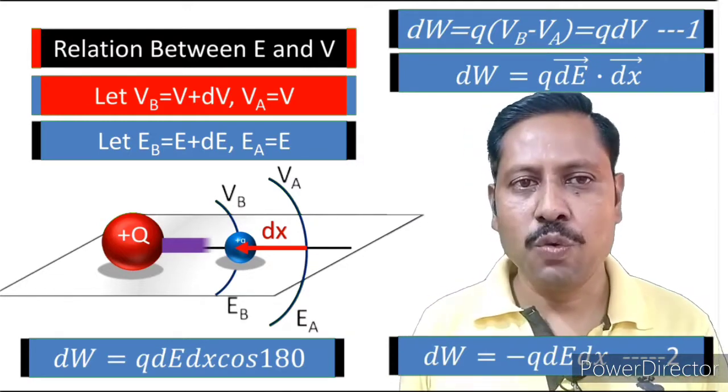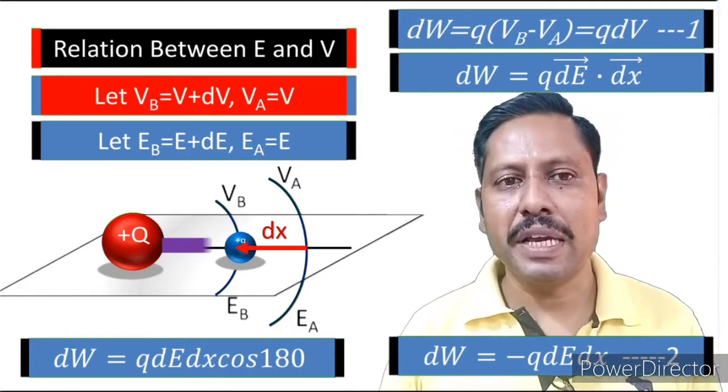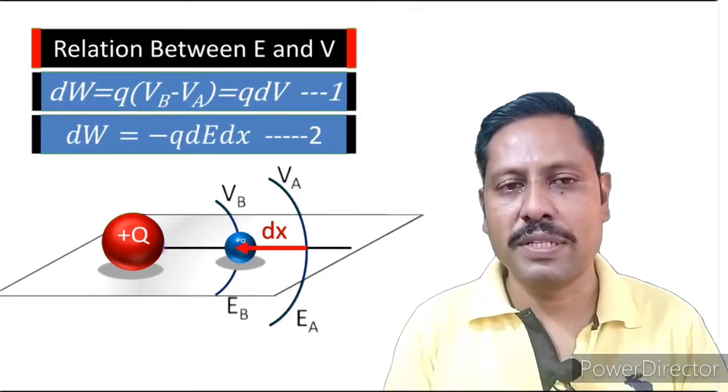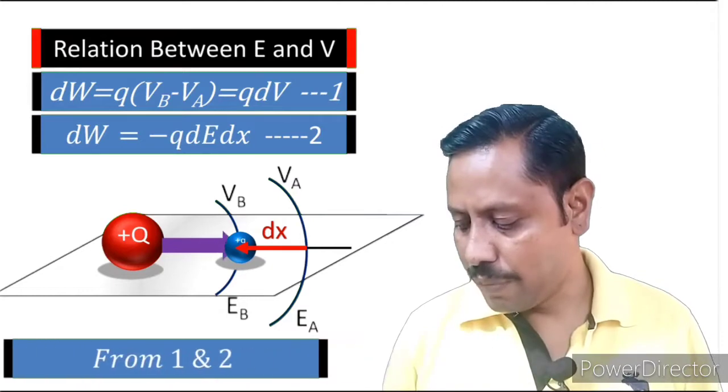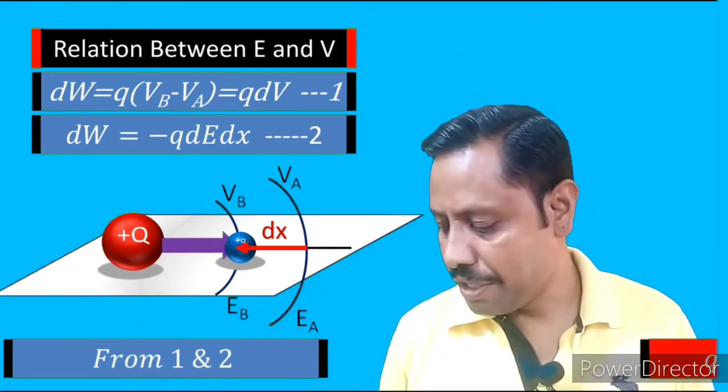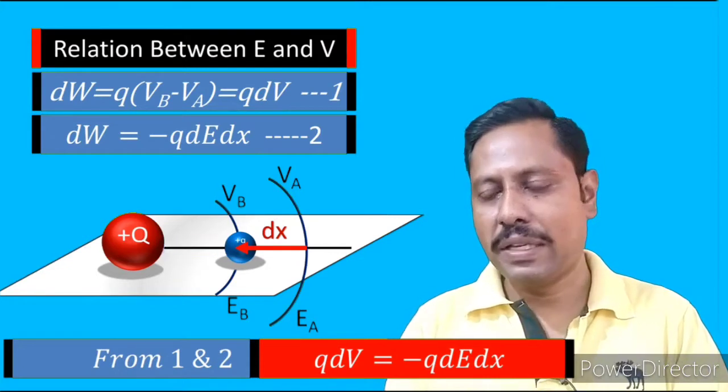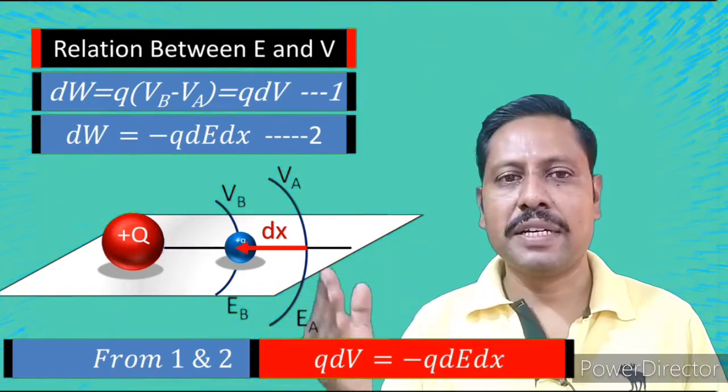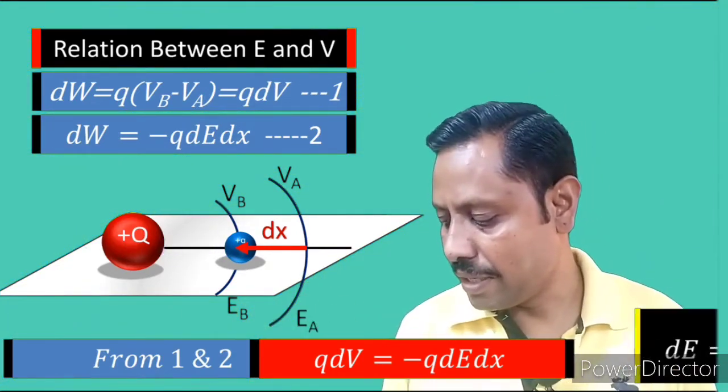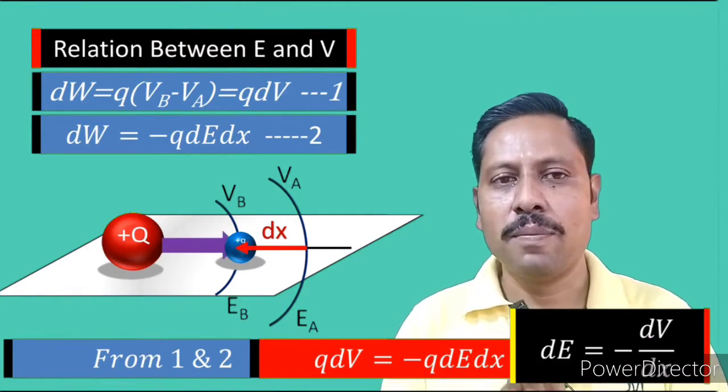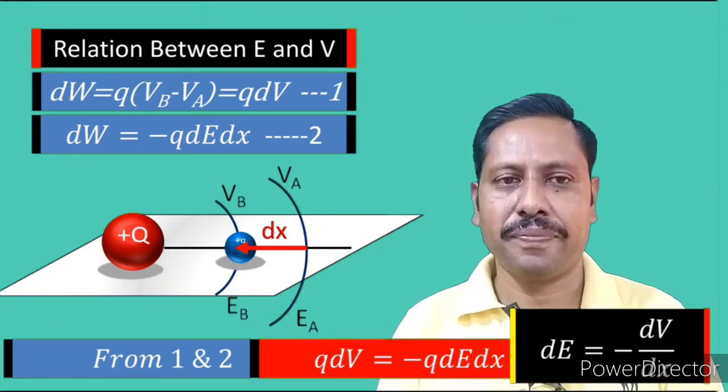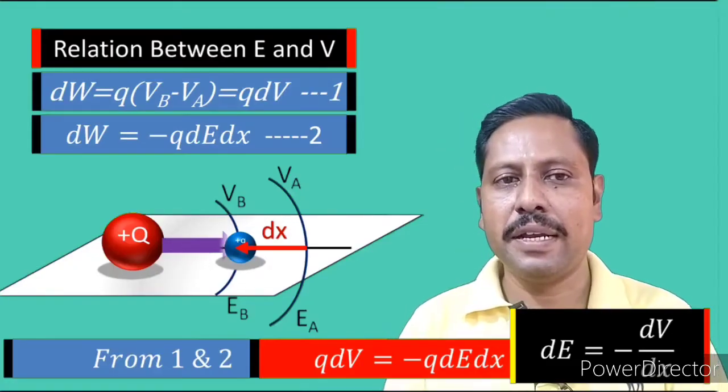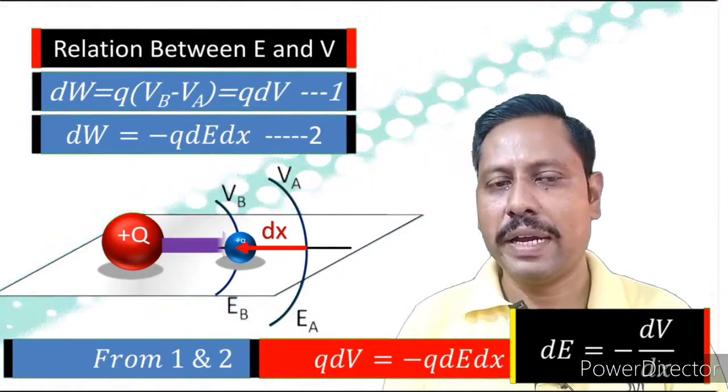So by using equation one and two, we can find out the relation between E and V. By combining these two equations, from one and two, we can write Q DV equals minus Q DE DX. And on simplifying, cancelling Q from both sides, we can simply write DE equals minus DV upon DX. So this is basically the relation between DE and DV, or electric field and V.